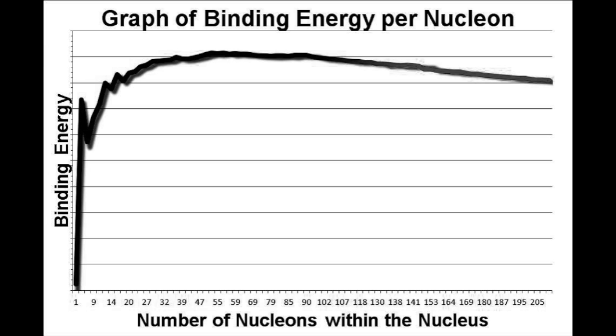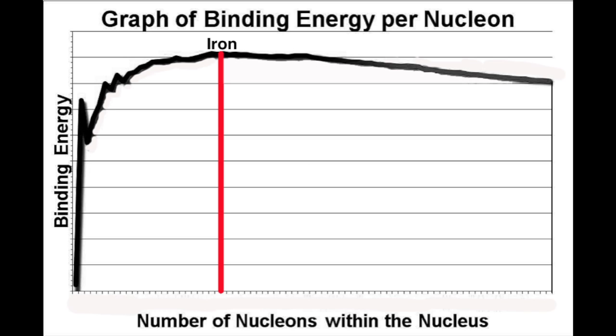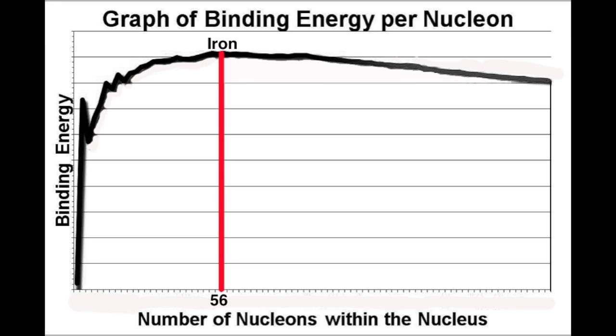Large atoms can be broken up and produce some energy, and small atoms can be put together and produce some energy. This graph here is a very important one. It describes the amount of energy that is holding together all of the particles within the nucleus. These particles, the major particles, protons and neutrons, are called nucleons. And the energy holding them together is called the binding energy.